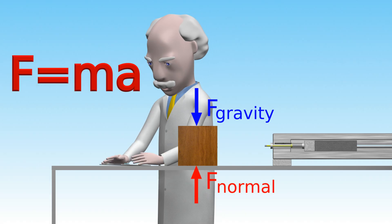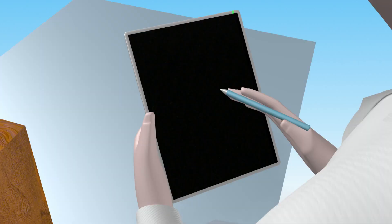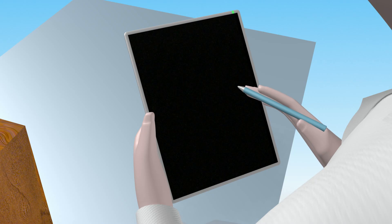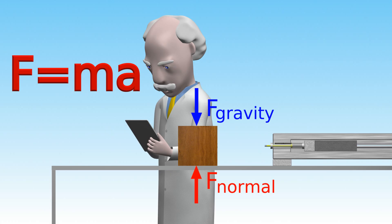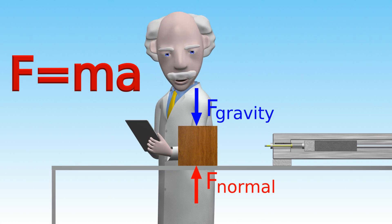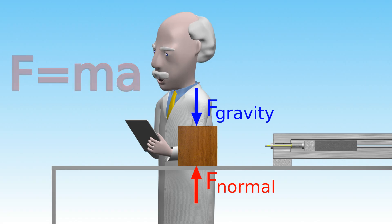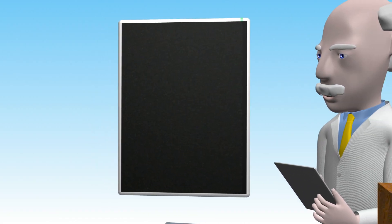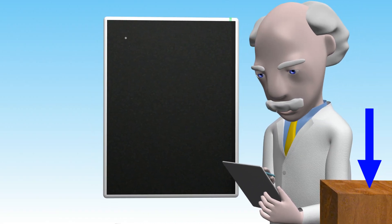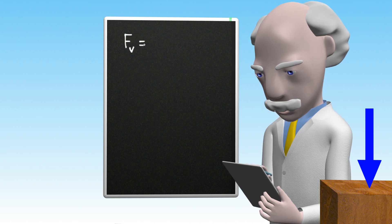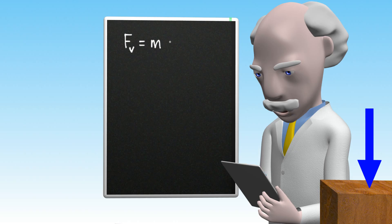So what does F equals MA tell us about the vertical acceleration of the block when the sum of the forces in the vertical direction is zero? Well, let's write down the equation and see. We start with the sum of the forces in the vertical direction equals the mass of the block times the vertical acceleration.